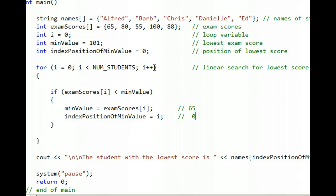Now the i plus pluses, we go around the loop a second time, and i is now up to 1, and we check to see if examScores[1] is less than minValue. Well, the examScores[1] is an 80. Is 80 less than minValue? No, it's not. So all this gets ignored inside the if statement. And we i plus plus.